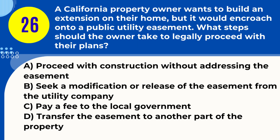Question 26. A California property owner wants to build an extension on their home, but it would encroach onto a public utility easement. What steps should the owner take to legally proceed with their plans? A. Proceed with construction without addressing the easement. B. Seek a modification or release of the easement from the utility company. C. Pay a fee to the local government. D. Transfer the easement to another part of the property. Answer: B. Seek a modification or release of the easement from the utility company. Explanation: In California, building on a public utility easement requires the property owner to negotiate with the utility company for an easement modification or release.